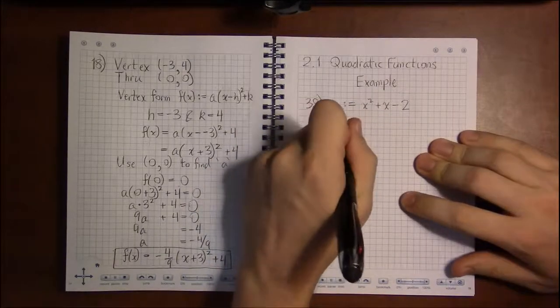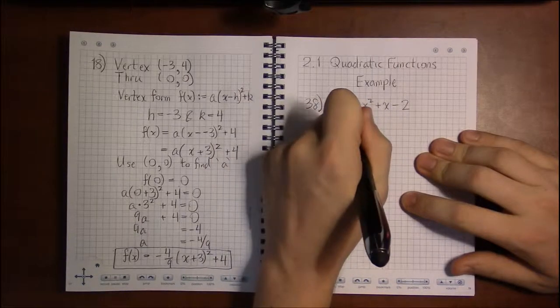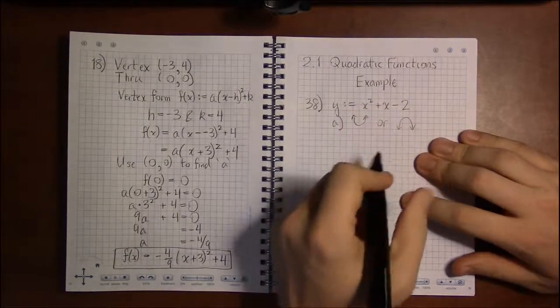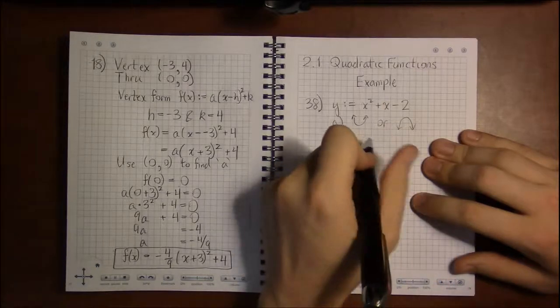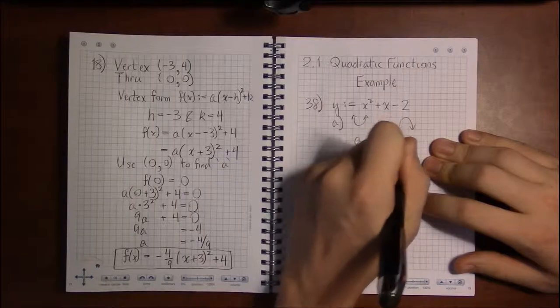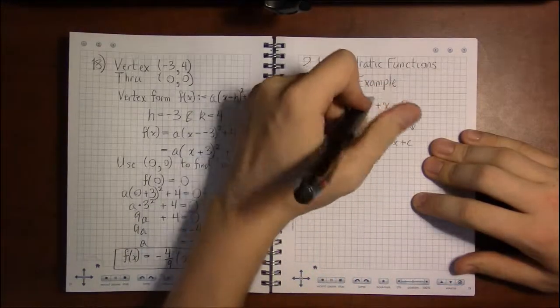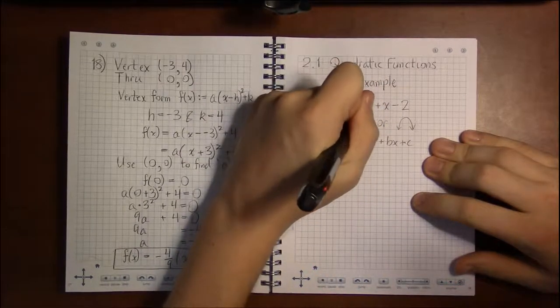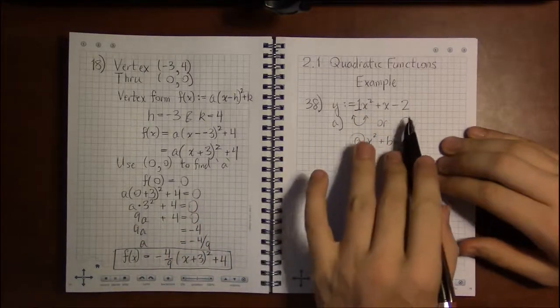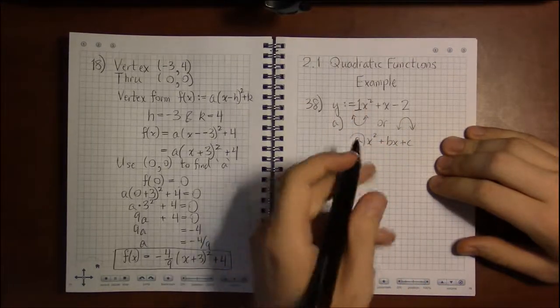We'll start with determining whether the graph opens up or opens down. Remember that's solely determined by the a in standard form. And in our case we don't have a number multiplying x squared. So we can always make it 1 because 1 times anything is just itself. Multiplying by 1 doesn't change anything. So this formula is still the same as it was before I wrote the 1 in there.